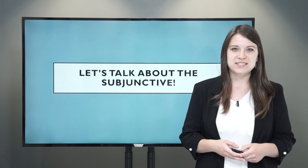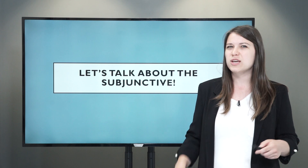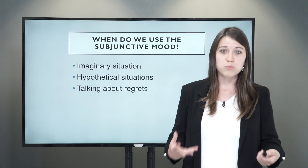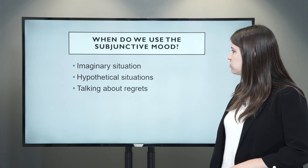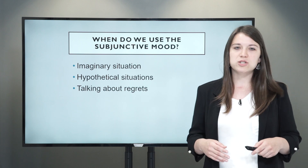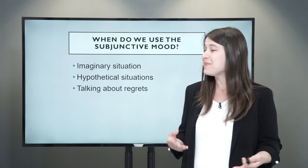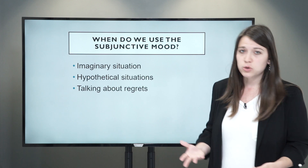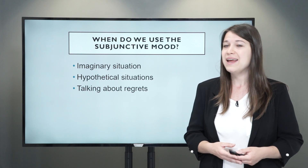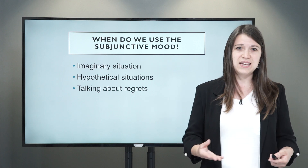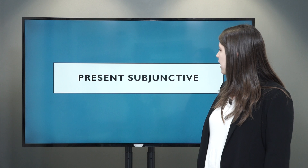So now let's talk about the subjunctive. First, let's look at what the subjunctive mood or the subjunctive form actually is. When do we use it? We use the subjunctive in English when we are talking about imaginary situations, situations that are not real, hypothetical situations — things that could happen but are not for sure — and talking about regrets, things that we wish we had done differently in the past.